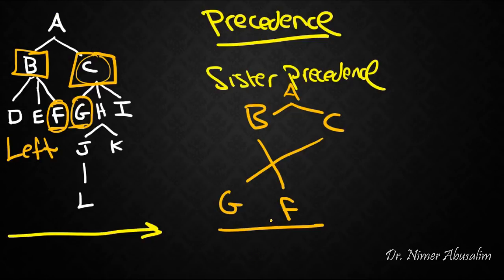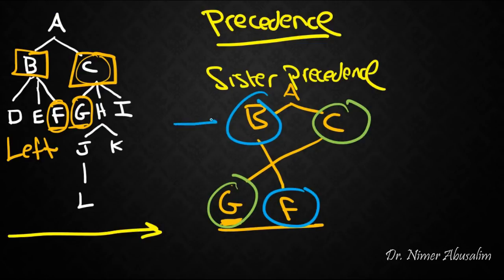So what we're going to do to make sure that something precedes something else is to look at the mother of each one. So the mother of G is C and the mother of F is B. Now let's look up here. Which one precedes the other one? It's clear that B precedes C. Therefore, F precedes G.